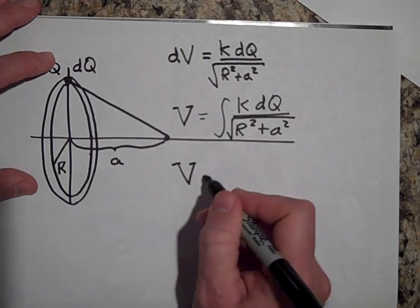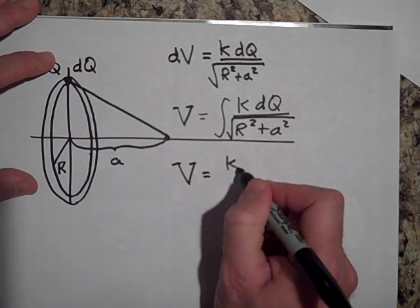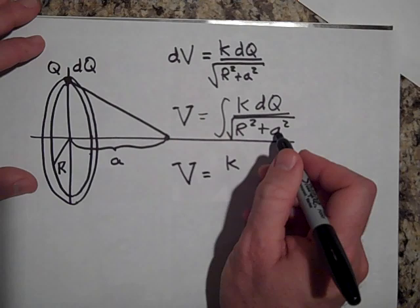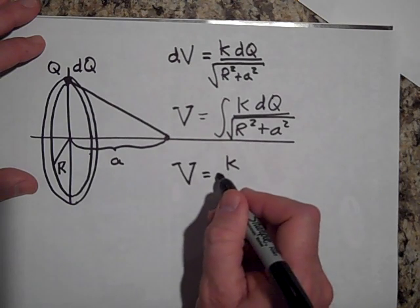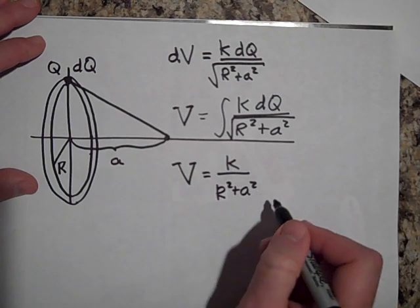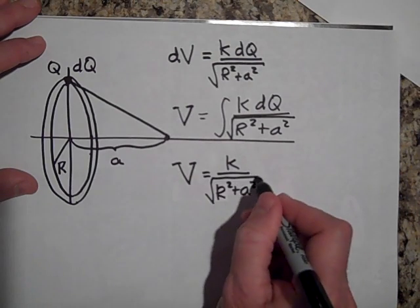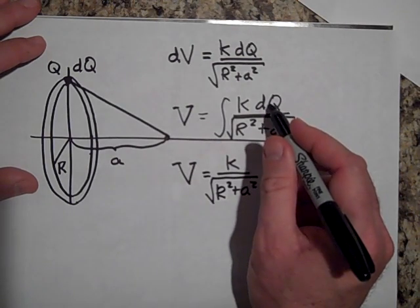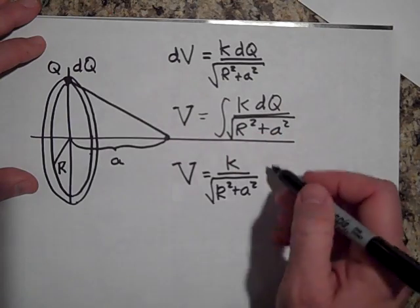Okay, so the constants are K. R is a constant and A is a constant. So it's K over R squared plus A squared, square root it. And when I sum up all the dQs all around the ring I'll just get Q.